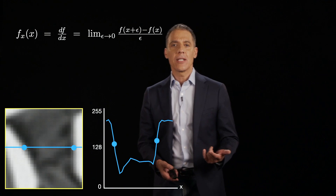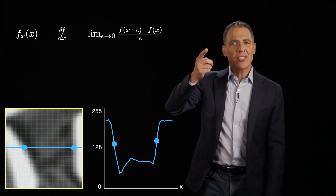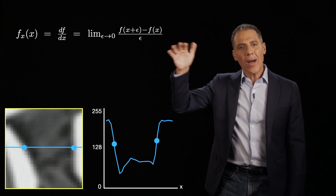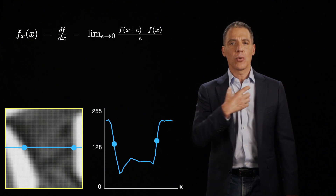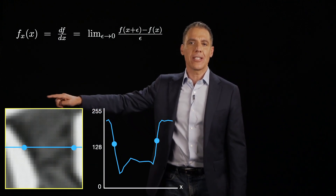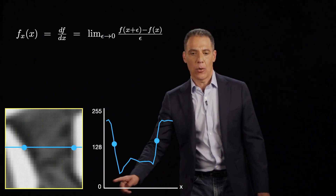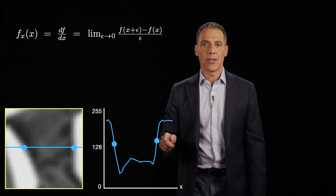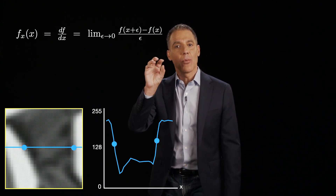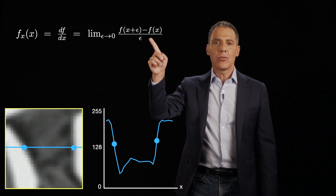Let's now define edges more quantitatively. We agreed that an edge is a rate of change in intensity, and so it seems natural to go to derivatives to quantify that rate of change. We have a little magnified view of Einstein's tie, showing a 1D slice through this in terms of intensity — white on top, black on the bottom — going from left to right. Those two points are the points of maximal change in intensity, and we can quantify that using the derivative.